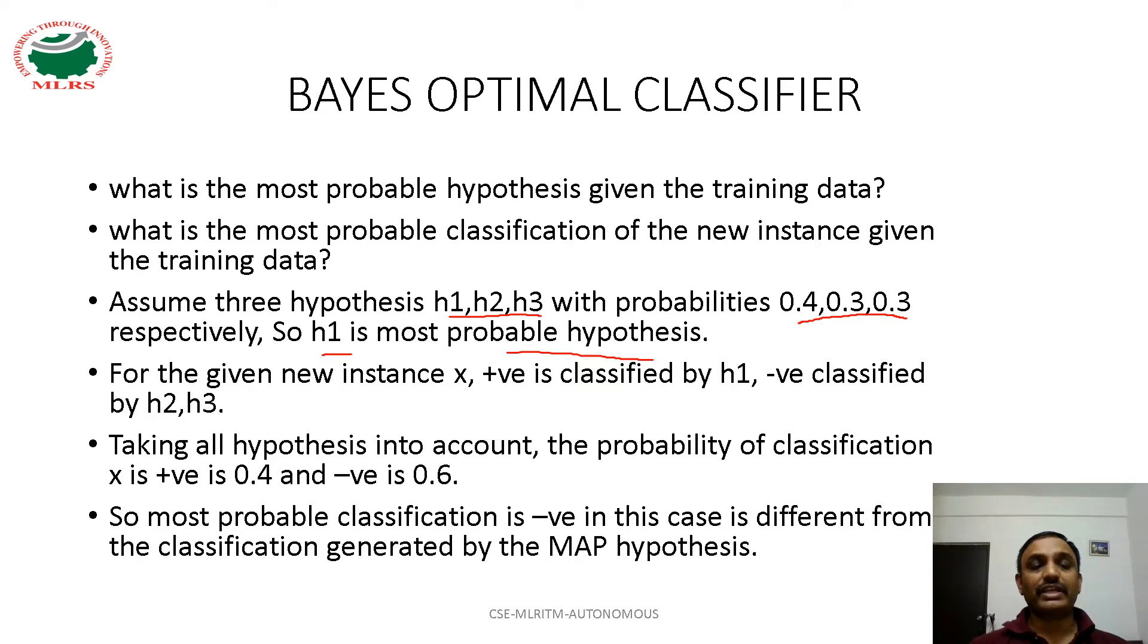Assume for the given new instance x, positive is classified by H1, negative is classified by H2 and H3. Taking all hypotheses into account, the probability of classification x is positive by 0.4, negative is 0.6. So most probable classification is negative.